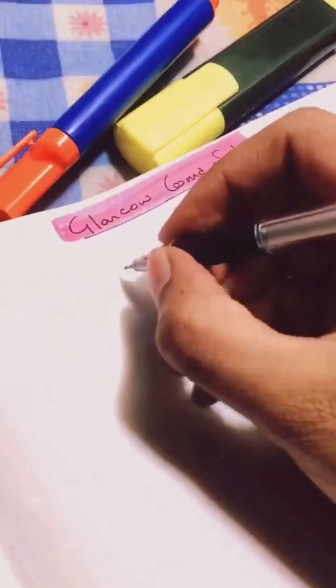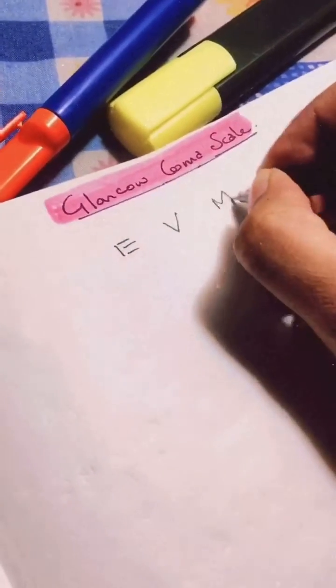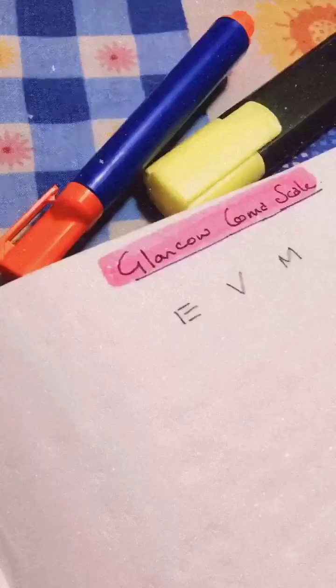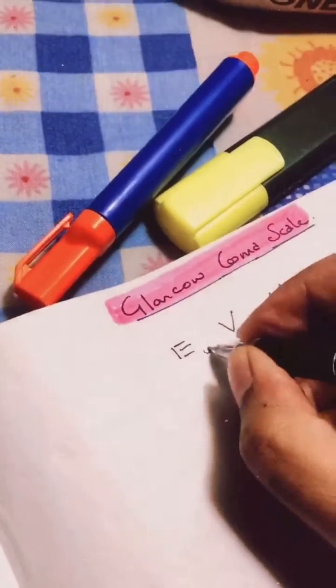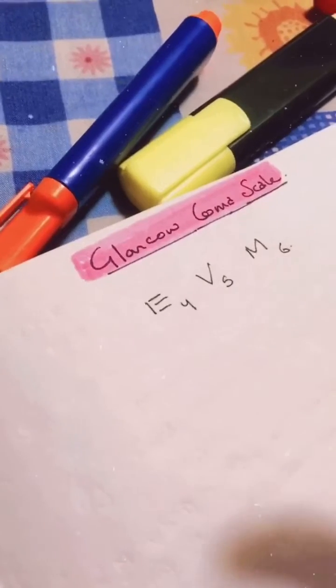Hi guys, as promised, Glasgow Coma Scale. The first basic rule is the electronic voting machine - you have to remember electronic voting machine. So Eye, Verbal, and Motor. After this, the second thing you have to remember is four, five, six. These are the scores we are going to be giving to the Eye, Verbal, and Motor criteria.